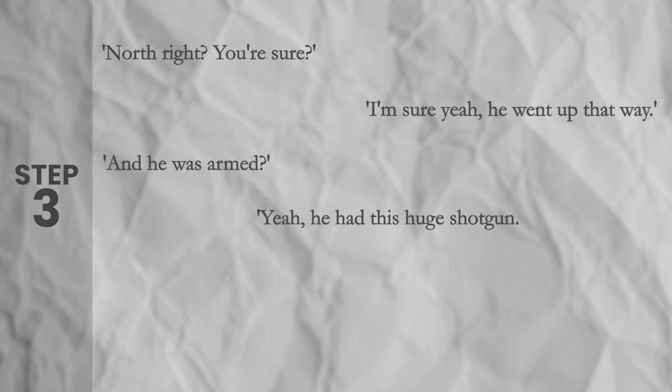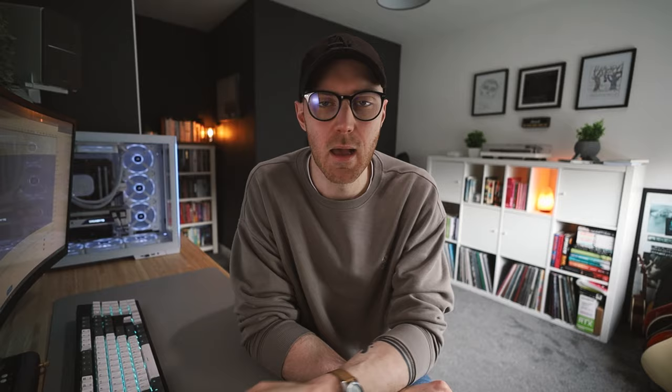So if we use a character profile to give us more to draw upon, we can add more personality to our dialogue. We'll add more emotion a little later on, so for now we just need to concentrate on making the officer and the shop owner feel a little more human. So how about this for step three: 'North, right — you sure?' 'I'm sure, yeah, he went up that way and he was armed.' 'Yeah, he had this huge shotgun.' 'Alright, lock the doors behind me, I'm going after him.' 'Really? You think that's a good idea?' Does still feel a little flat though, doesn't it? Half of that is the lack of emotion, and we'll come to that soon.